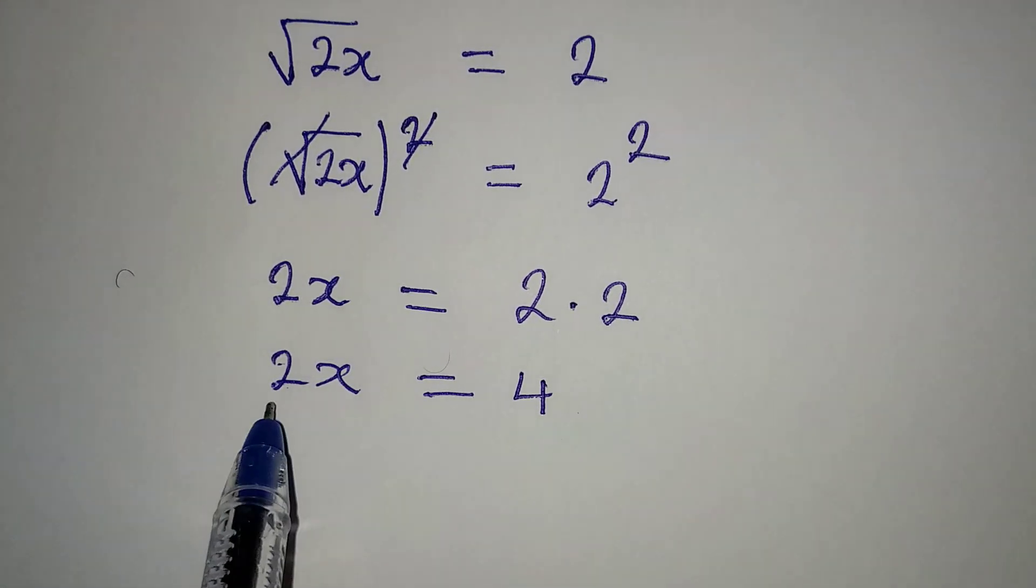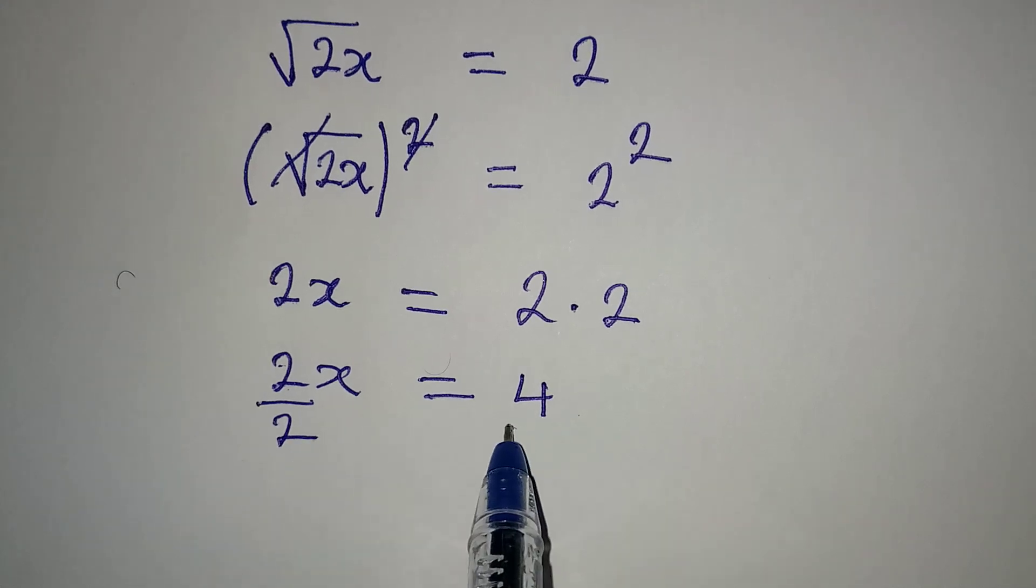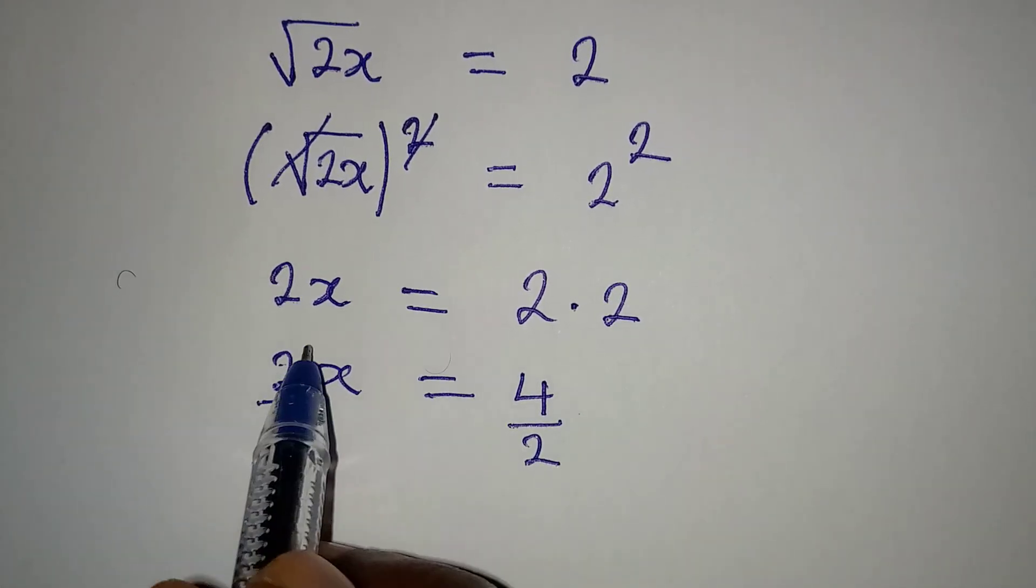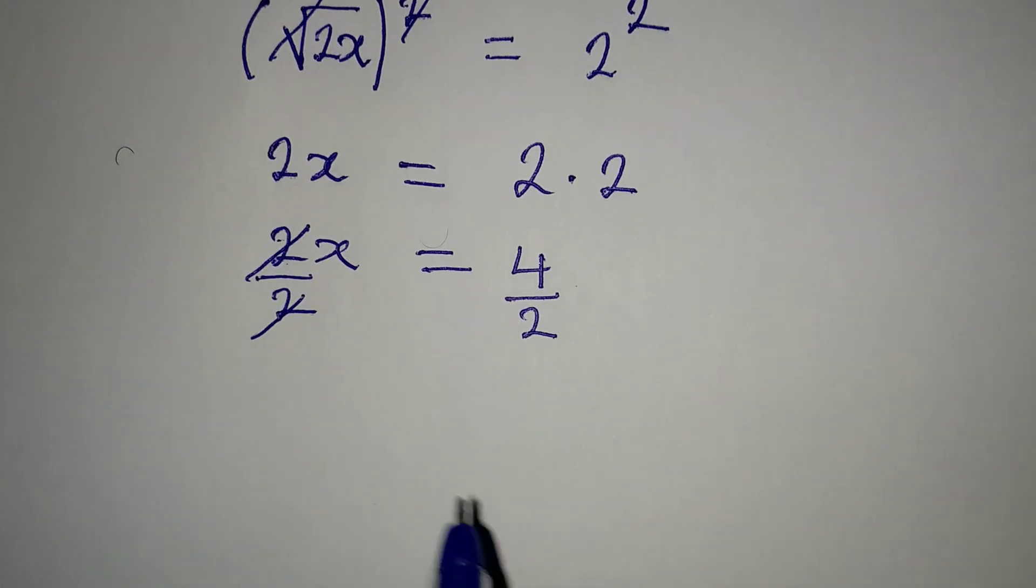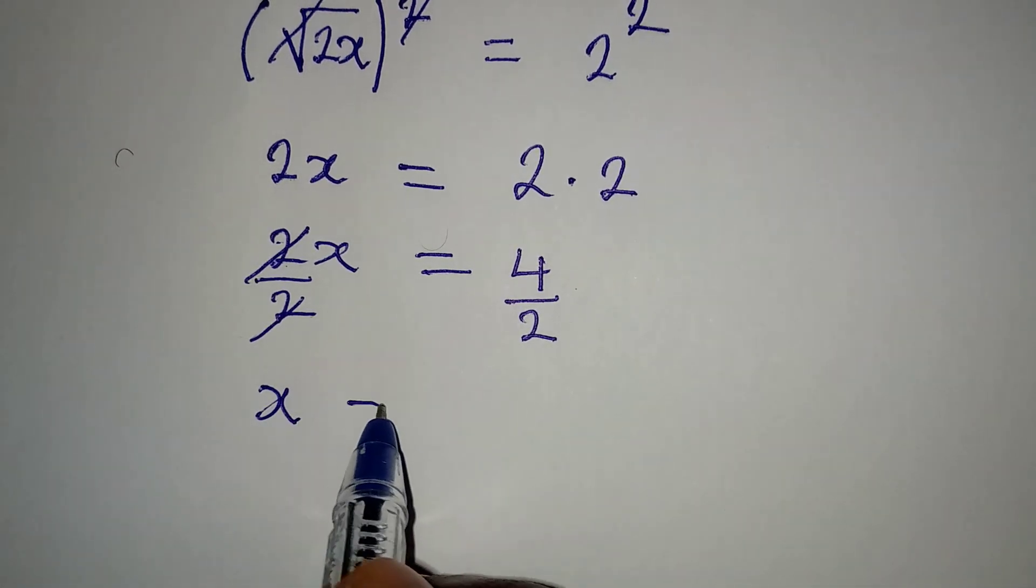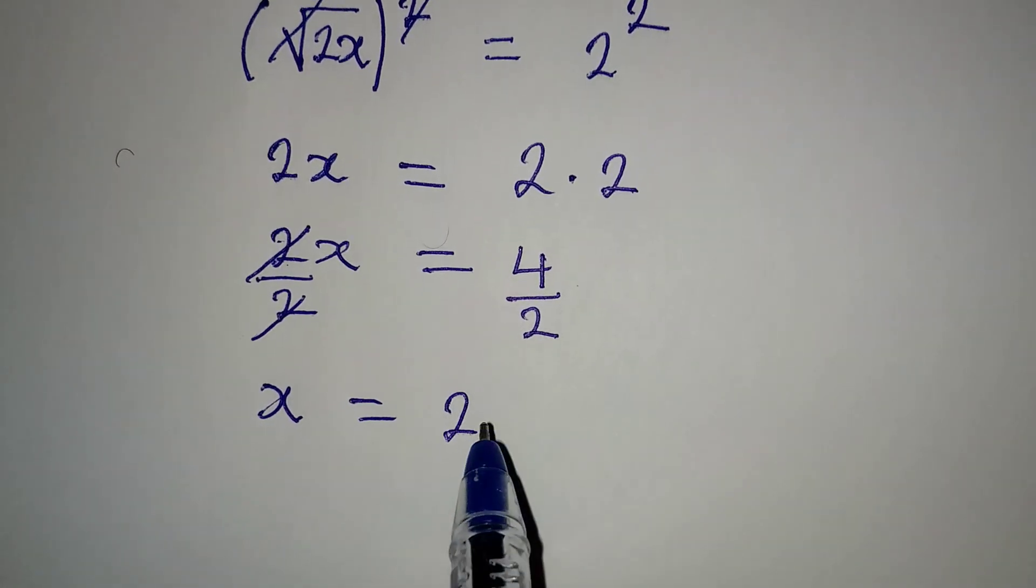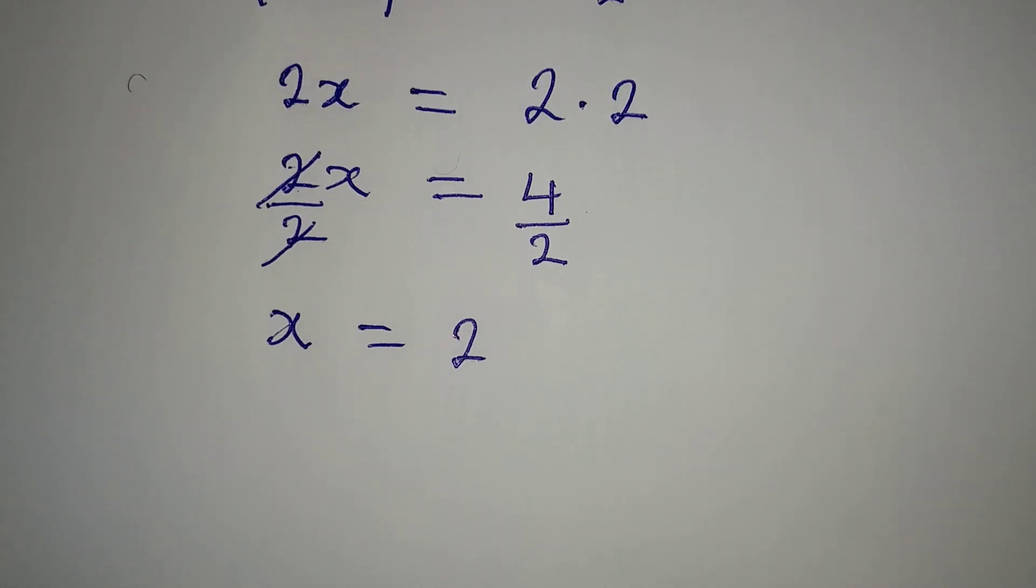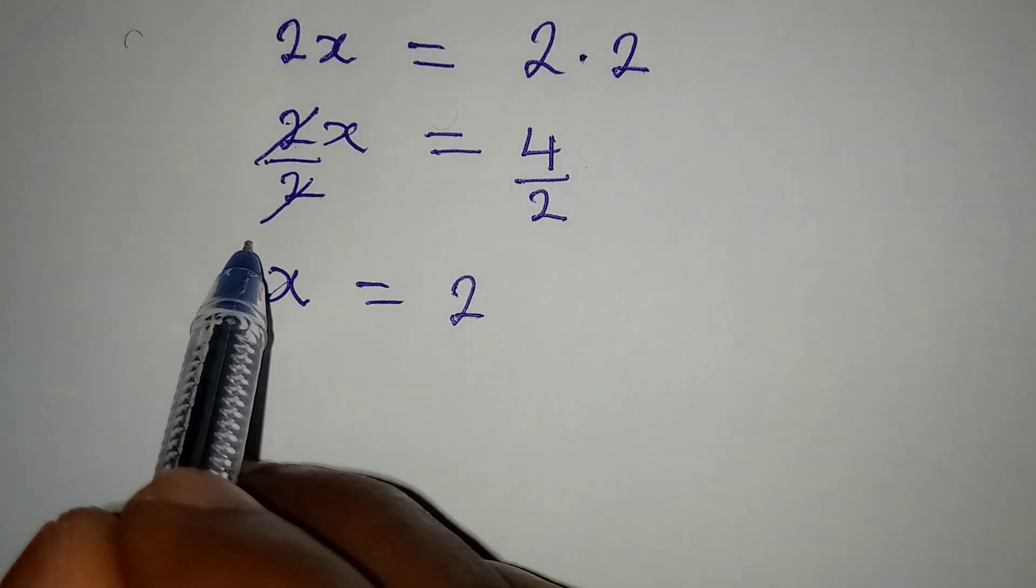We can divide both sides by 2. Remember we are trying to get the value of x, so x now will be 4 over 2, which is 2. So this is the value of x that should satisfy the equation.